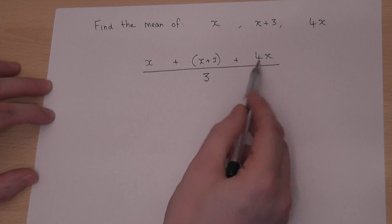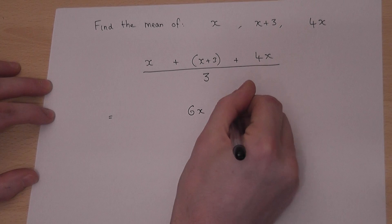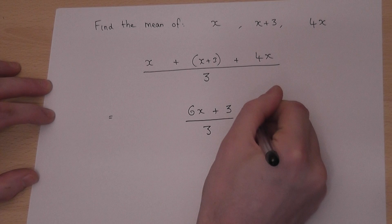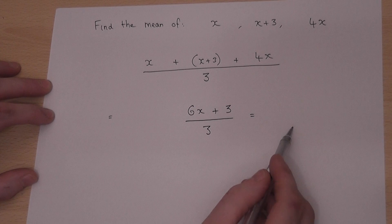x plus x plus 4x is 6x plus 3. I therefore divide by 3. So I've got my numerator divided by 3. So I must divide both of the terms on the top by 3.